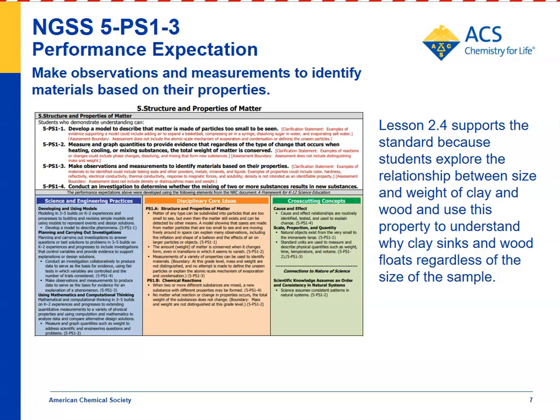NGSS Standard 5-PS1-3 says: make observations and measurements to identify materials based on their properties. You can use sink and float, or density, as a property of a substance. Every substance has its characteristic density. We looked at two in this experiment — clay and wood — different substances with different characteristic densities, no matter how much of either one you measure.